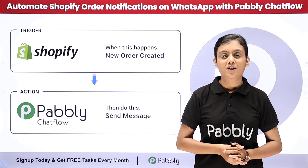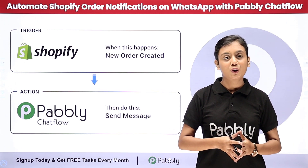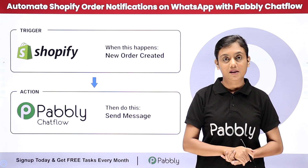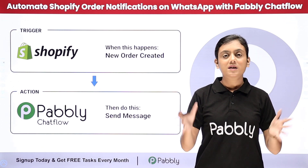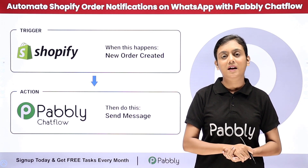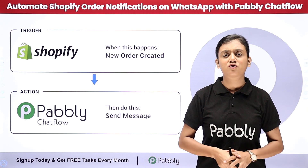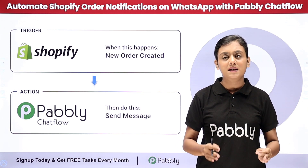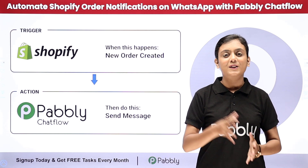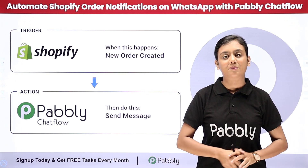I am an owner of a fashion apparel store and I manage my store with the help of Shopify, in which I frequently receive a lot of orders. What I want is to send confirmation messages to my customers on WhatsApp, but sending these messages manually after each new order is placed is very time consuming and hectic. So to solve this problem, I have created an automation using Pabbly Connect.